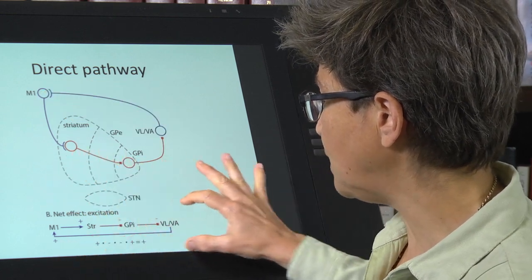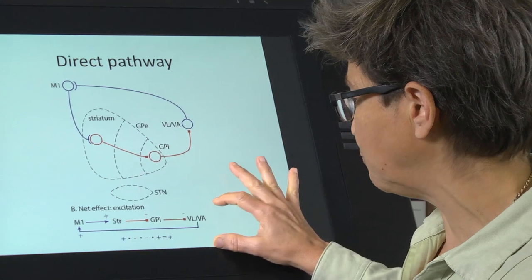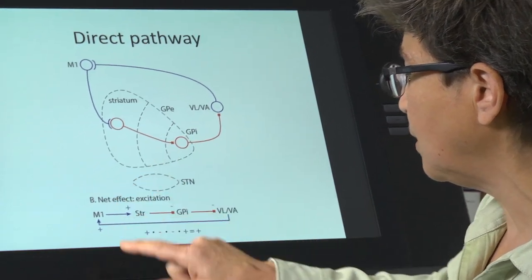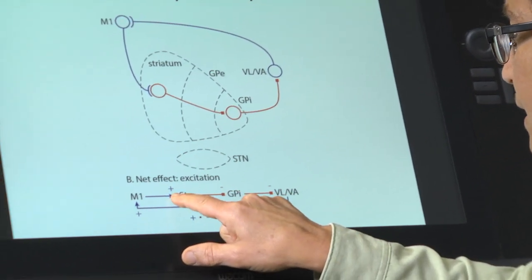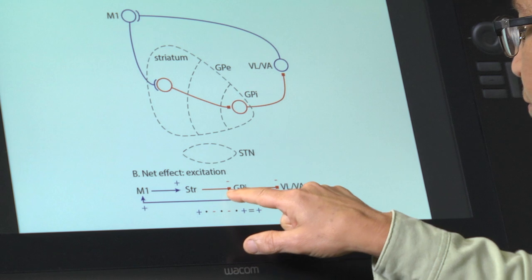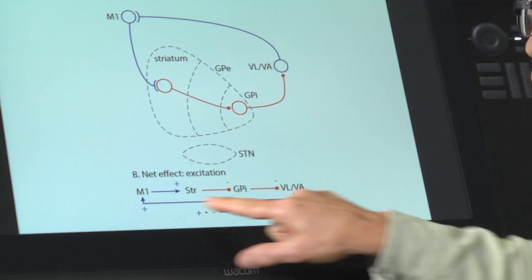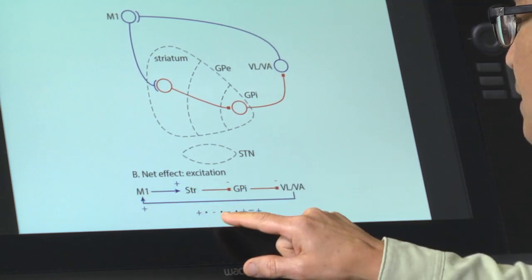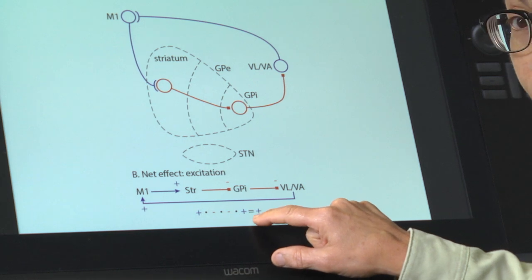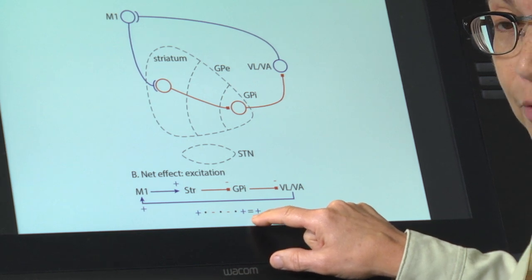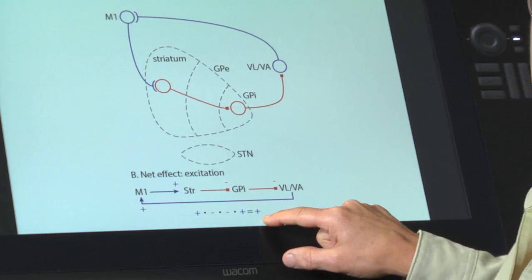If we zoom in on the bottom line here: this is an excitation followed by an inhibition, followed by an inhibition, followed by an excitation. So plus, minus, minus, plus. And what do you get when you multiply all those together? You get plus.